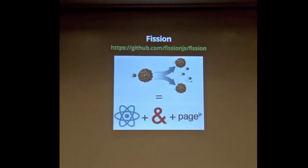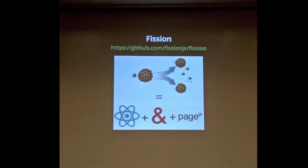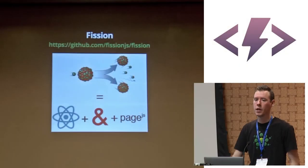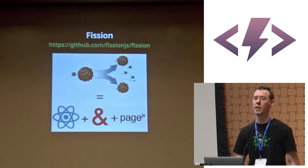So, Fission. This is a concrete implementation we're using in production that we've built around React. It's basically React for views, Ampersand models and collections, and PageJS for routing, with a few bits of sugar on top.